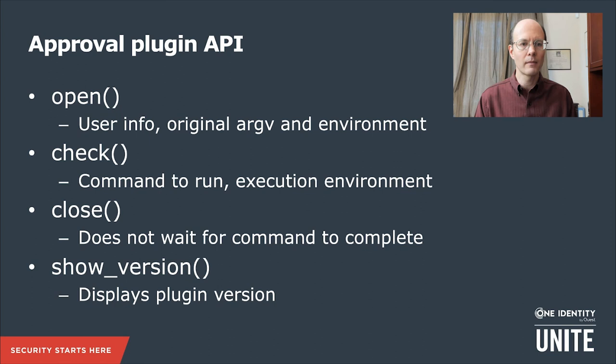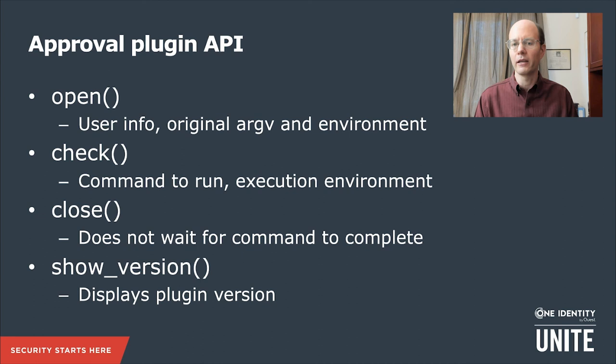So the approval plugin API looks like this. There's an open function, very similar to the audit plugin API, that receives the user information, the original argument vector, and environment. There's a check function that gets run after the policy approves the command, and that gets the command to run as well as the full execution environment as the policy plugin has set it. A close function gets called pretty much immediately after the check — this doesn't wait for the command to complete; it's just a way of cleaning up resources. And then there's a show version function just like the other plugins have.